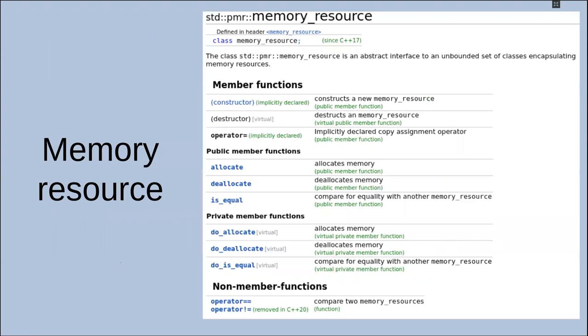Let's see what is a memory resource. It's very simple because there's three public methods: allocate, deallocate, and is_equal. They are called by allocators and are pure virtual functions.